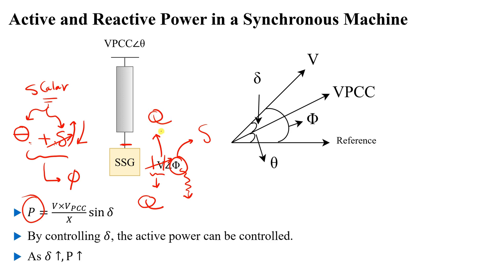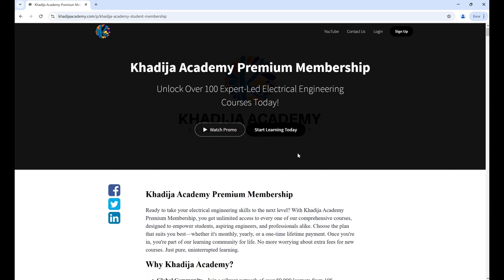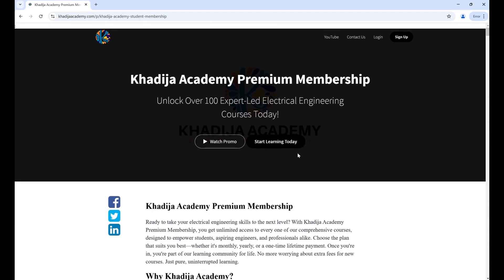In summary: by controlling the magnitude and phase of the inverter output voltage using any switching technique, we can independently control both active power and reactive power from a static synchronous generator. I hope this concept is now clear — how we control our system using these two parameters.